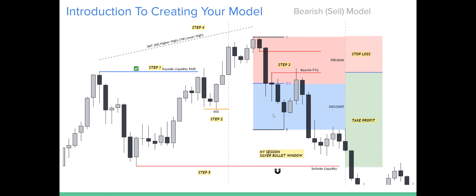Step three is price retracing back inside of a fair value gap. From this dealing range high down to this low, equilibrium is here. We're not selling in a discount — we're selling in a premium. So we don't want to sell down here. If there's a fair value gap down here, I'm not selling there — I'm selling at the premium fair value gap. Price retraces up into the bearish fair value gap. Entry is at 10 to 25% of the fair value gap. Stop loss goes either above the second candle that creates the fair value gap or above this high. One, two, three — that's three candles creating the fair value gap. Take profit beneath this low or any other sell-side liquidity resting beneath price. Price then drops down and takes out sell-side liquidity.